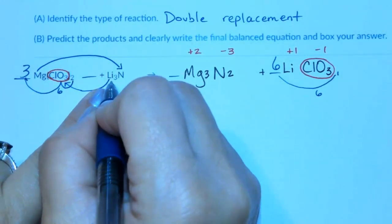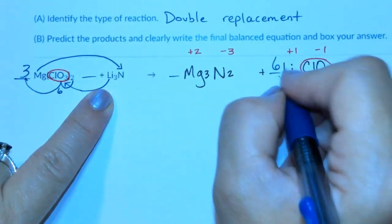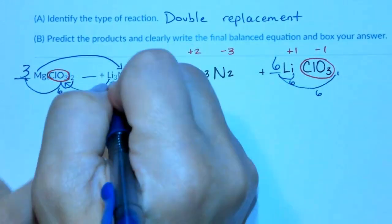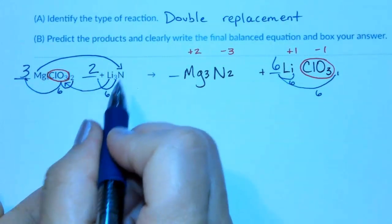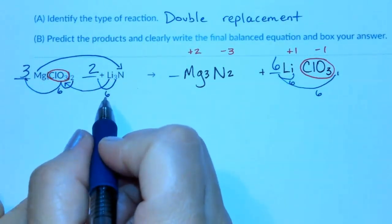There are now 3 lithium, but over here we have 6 lithium. So 3 times what is going to equal 6? And that's going to be 3 times 2 is going to equal the 6 lithiums.